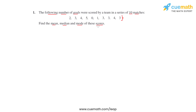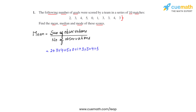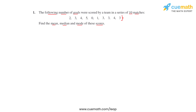We will start by finding the mean, for which the formula is sum of observations divided by the number of observations. The sum of observations is found by adding up all the scores and then dividing by 10, since 10 matches were played. We get the sum of scores to be 28, and dividing by 10 gives us 2.8, which is the mean of the given scores.